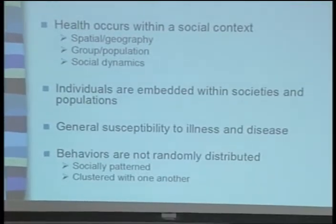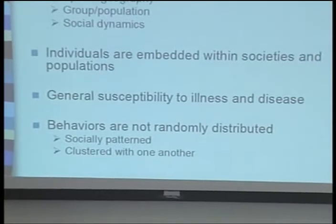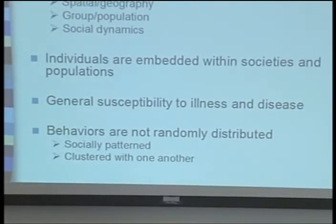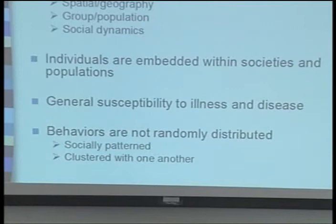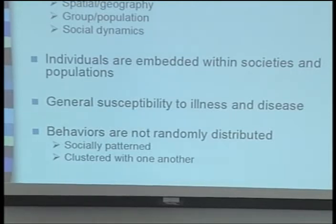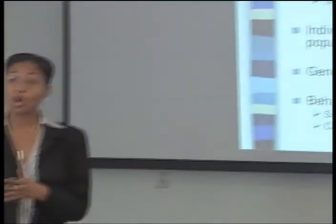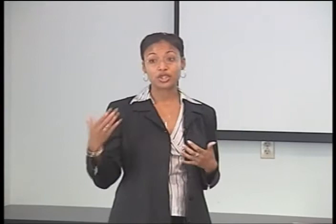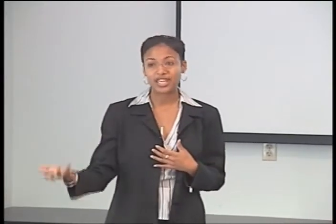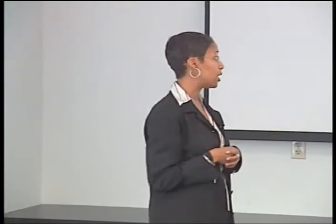Next is this idea of a general susceptibility to illness and disease. Being poor may disproportionately expose me to numerous risk factors — living conditions, neighborhood environment, certain behaviors. With obesity, for example, am I obese because I made poor decisions, or because my environment constrained the choices I can make in terms of physical activity and access to healthy food options? A general susceptibility to illness and disease from social factors would exist for numerous risk factors and numerous disease outcomes.